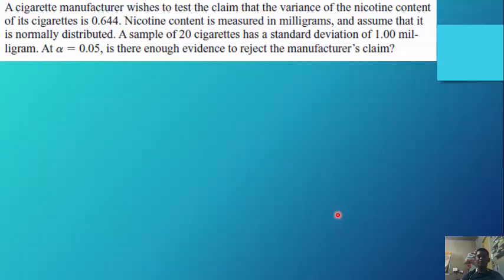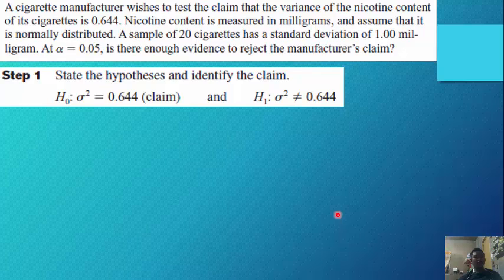A sample of 20 cigarettes has a standard deviation of 1 milligram. At an alpha of 0.05, is there enough evidence to reject the manufacturer's claim? Step 1: H₀: σ² = 0.644 (the claim), H₁: σ² ≠ 0.644.